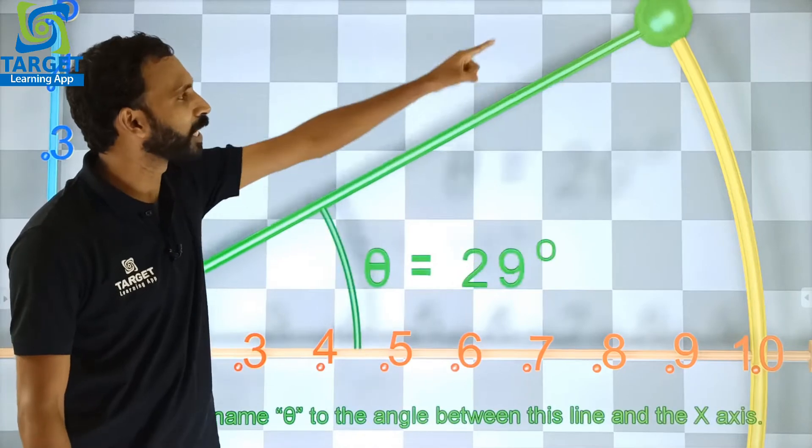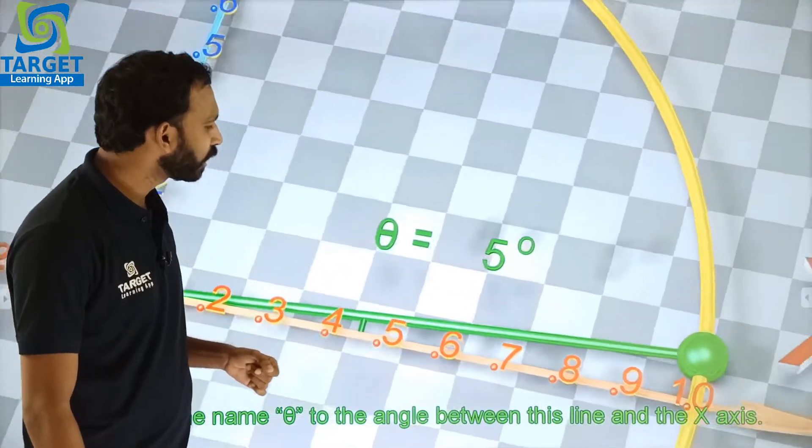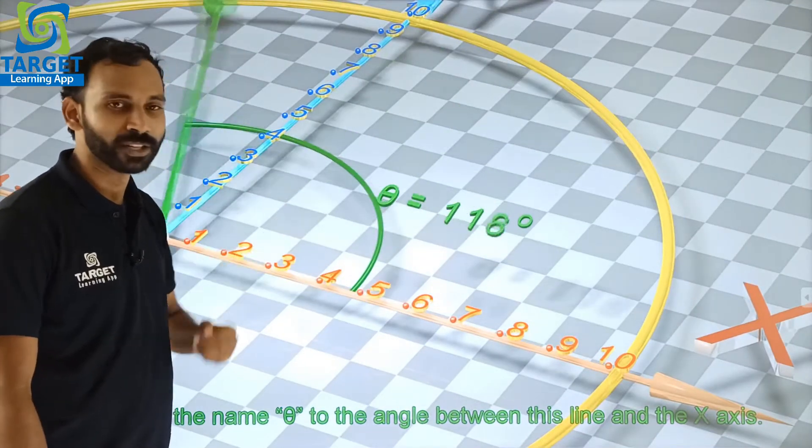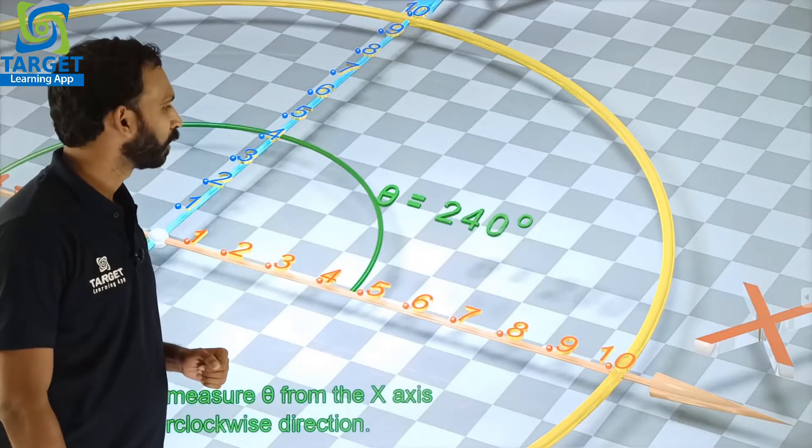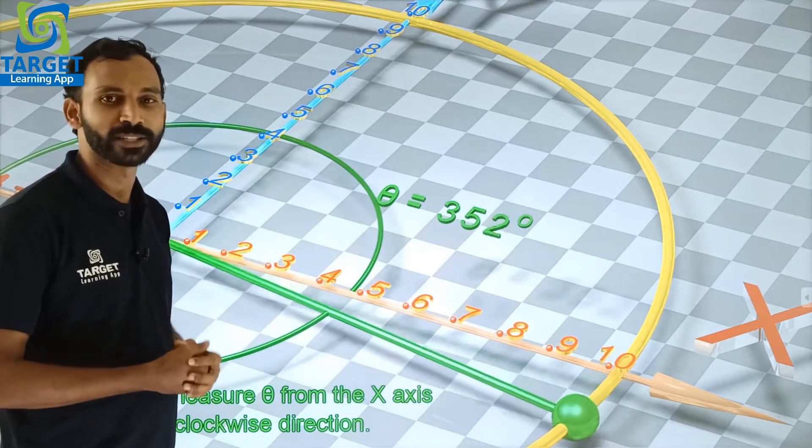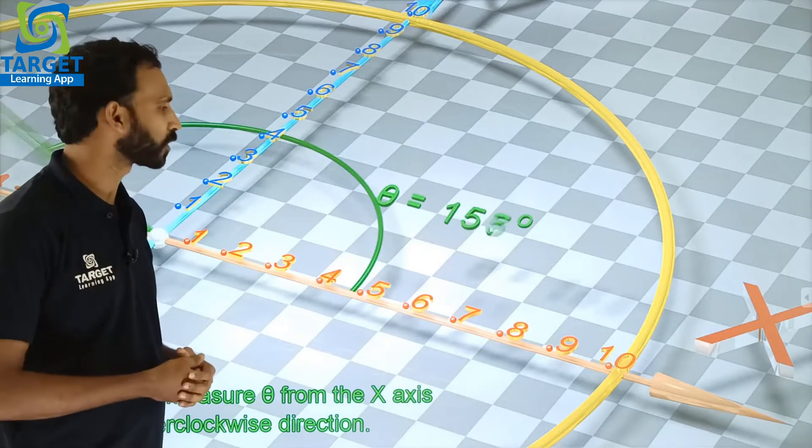And look at the green line corresponding to a green ball. And you can see there is an angle theta between the green line and the x-axis. Let's always measure angle theta from the x-axis in the counter-clockwise direction or in anti-clockwise direction.